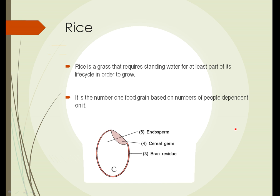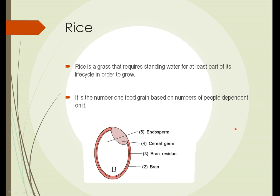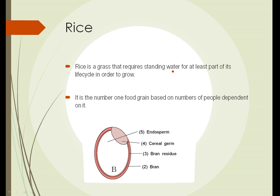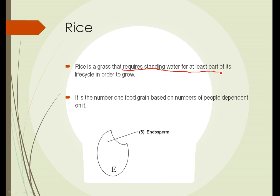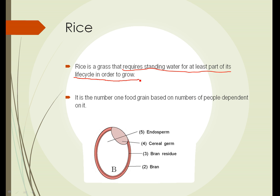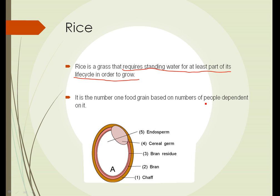Rice, combined with corn and wheat, forms the three most important grain crops we grow. Rice is a grass, but different from most others — it requires standing water for at least part of its life cycle in order to grow. Based on the number of people dependent on it as a primary food, rice is the number one food grain in the world. From the diagram, we can see the structure is similar to other grasses: we have bran, the germ, and the endosperm. In rice and wheat, there's also an outer coating called chaff, which is removed in processing.